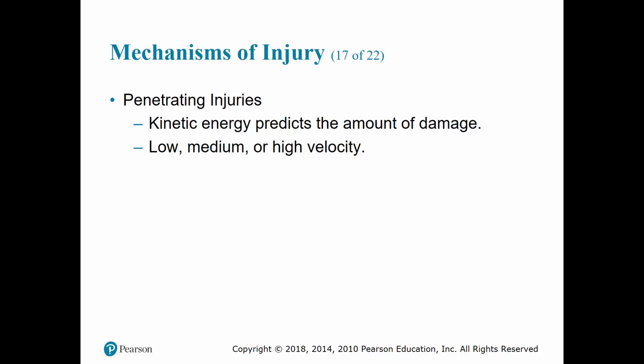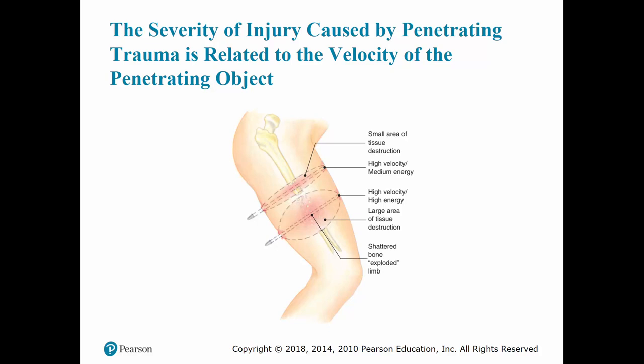Penetrating injuries are caused by any object that could potentially penetrate the surface of the body, such as bullets, darts, nails, and knives. The amount of damage depends on the kinetic energy transferred to the tissue and the area of the body it penetrates. Penetrating injuries are broken up into low, medium, and high velocity injuries. Low velocity would be stabbing with knives, medium velocity would be handguns, and high velocity would be rifles. The amount of kinetic energy transferred to the tissue is the greatest indicator for potential damage — a knife limits damage to just the immediate site and underlying tissues.